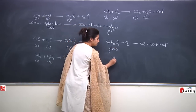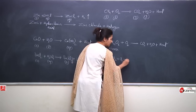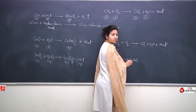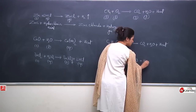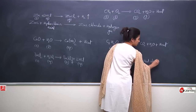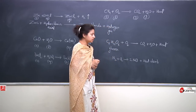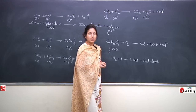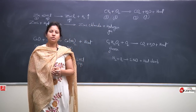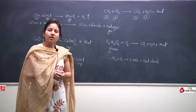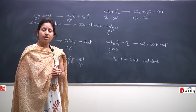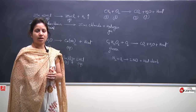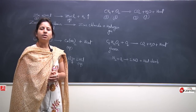Next reaction: N2 (g) + O2 (g) → 2NO (nitrous oxide). This reaction is endothermic — heat is being absorbed. So we write 'heat absorb'. We can write 'heat' where it is being released, and 'heat absorb' where it is being absorbed — meaning this is an endothermic reaction. So from the representation of chemical reactions, we can know the physical states, whether it is exothermic or endothermic, which gas is being released, and whether a precipitate is forming.